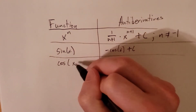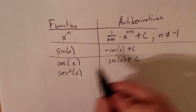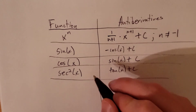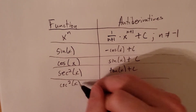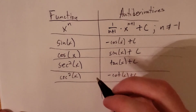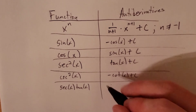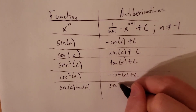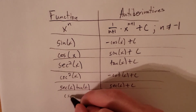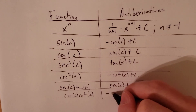Let's write out a couple more. Recall that the derivative of tangent is secant squared, so the antiderivative of secant squared is tangent. Similarly for cosecant squared, we get negative cotangent. The derivative of secant x is secant x tan x, so the antiderivative of secant x tan x is secant of x. And finally, the derivative of cosecant is negative cosecant cotangent, so the antiderivative of cosecant cotangent is negative cosecant of x.